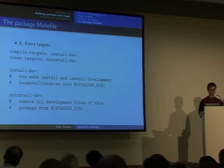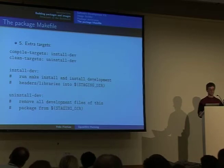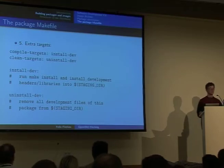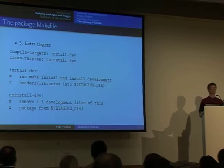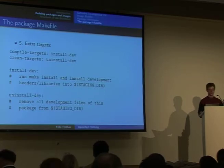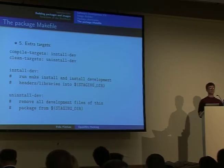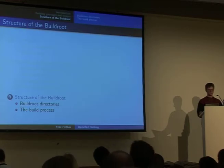Compile targets will be run directly after the normal build process, and clean targets will be run directly after make clean has been run, either by running mostly clean or by running the normal clean process. What you usually do is add an extra target to compile targets, which we mainly call install_dev — you just run the necessary make commands to install all development-related files into the staging directory, usually by running make install on the source directory.